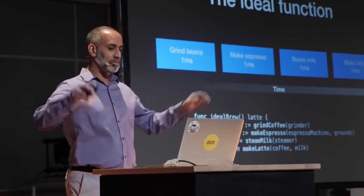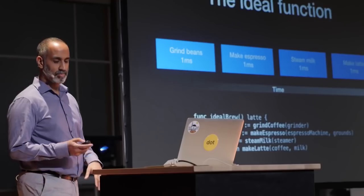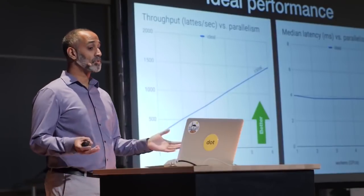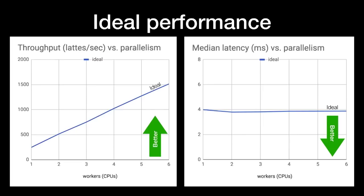This code shows the ideal brew function, which runs the four steps and returns the latte. The first step grinds the coffee using the grinder and returns the grounds. The second step prepares the coffee using the espresso machine and the grounds. The third step steams the milk using the steamer. The final step makes the latte using the coffee and milk. In the ideal implementation, we can prepare as many lattes in parallel as our CPUs can handle. With one CPU, we can prepare one latte in four milliseconds.